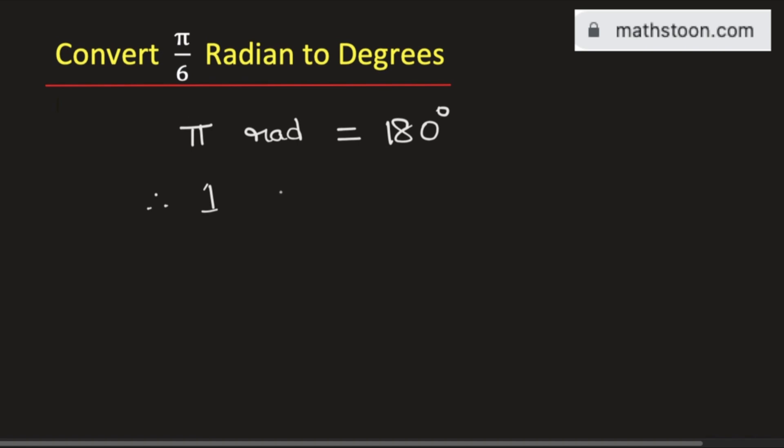Therefore, 1 radian will be equal to 180 divided by π degrees.